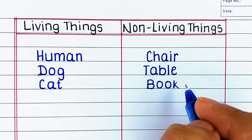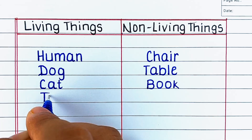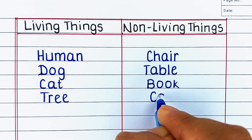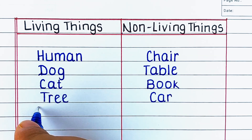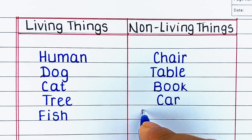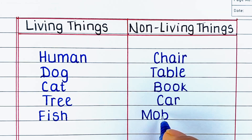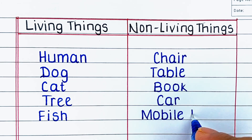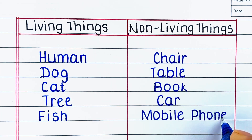Next living thing is cat. Next non-living thing is book. Next living thing is tree. Next non-living thing is stone. Next living thing is fish. Next non-living thing is mobile phone.